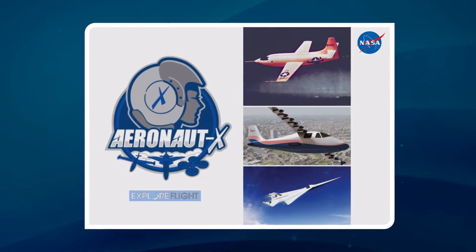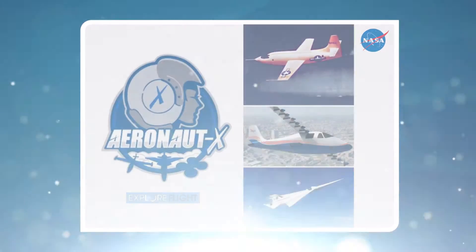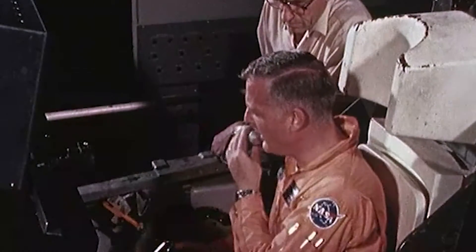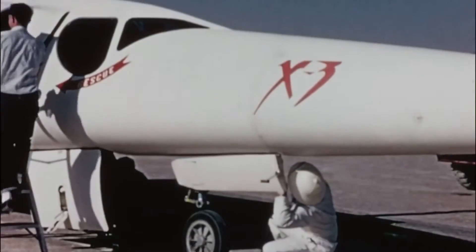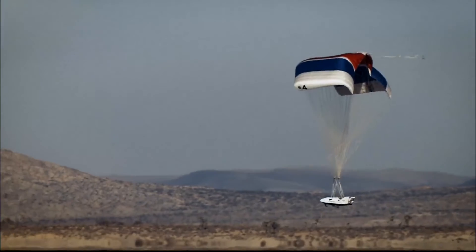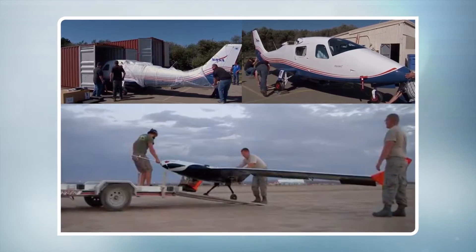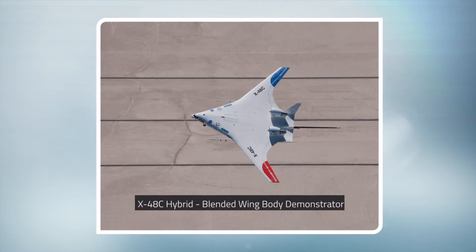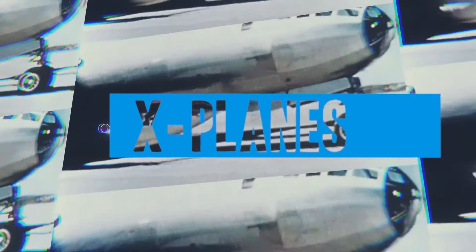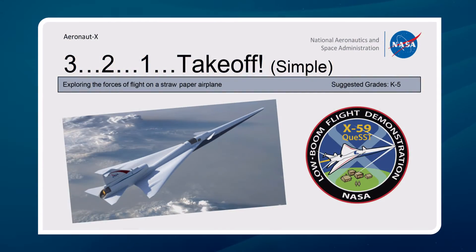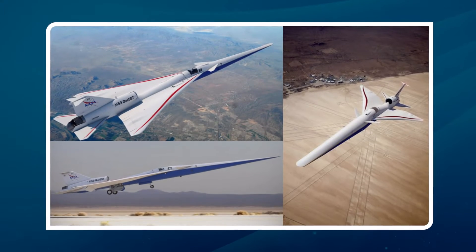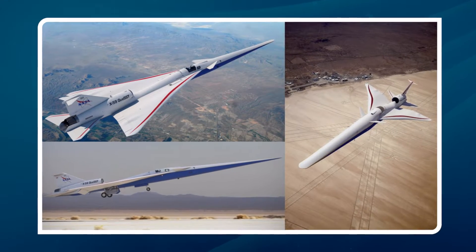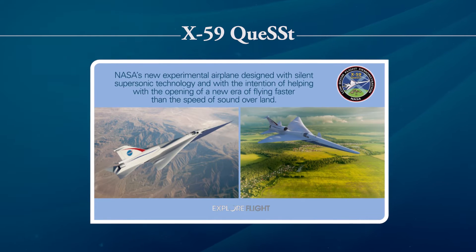AeronautX is one of NASA's next-gen STEM programs. It focuses on research and technological developments in aeronautics that have served as small steps and been an important part of many significant NASA accomplishments, known as giant leaps. AeronautX focuses on the latest in aeronautics and the principles of sound, especially research to create new generations of experimental aircraft called X-planes. In this activity, we will focus on the creation of a paper airplane that represents the X-59.